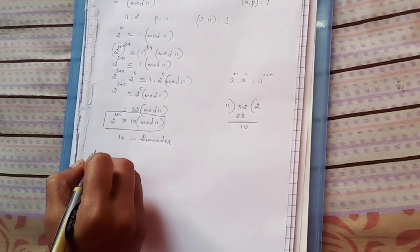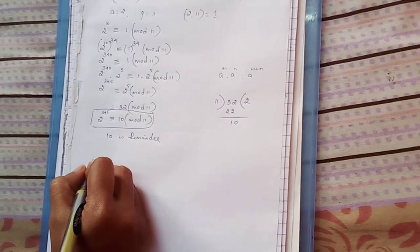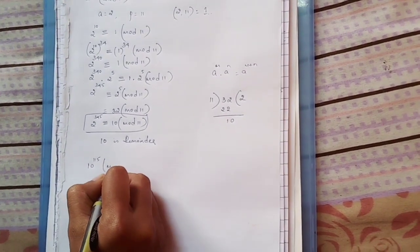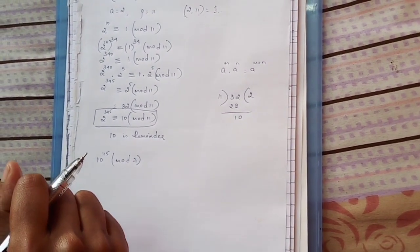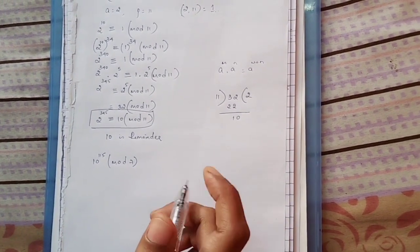Hence we have found the remainder by using Fermat's theorem. I'll give you another question: when 10 to the power 115 is divided by mod 7, try by yourself and drop a comment if you have any doubts. Thank you.